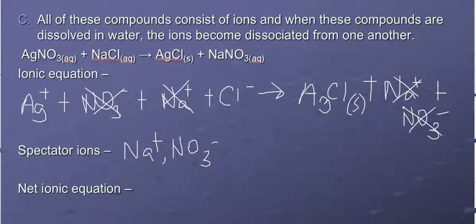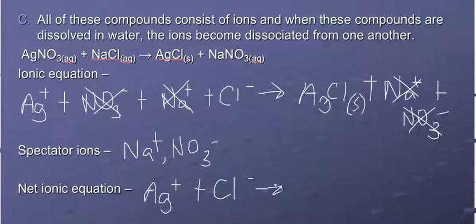The net ionic equation shows what's left after we get rid of the spectators. In this case the net shows the formation of the solid, which is silver chloride. So that is the net ionic equation.